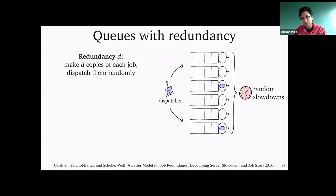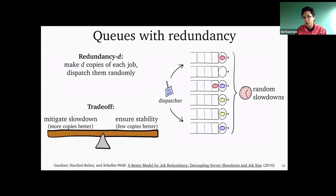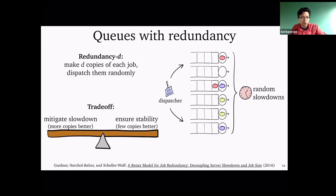In network systems there's an additional wrinkle: servers can have random slowdowns. Each job has a fixed size, but servers may slow down due to some other reason. What you want to understand is: as you keep doing this redundant queuing — taking the same job, creating D copies, sending them to D random servers — how does the system behave? By creating redundant copies, you're removing the slowdown: even if one server slows down, since you're being served elsewhere, overall you may get processed faster. But by creating multiple copies, you may actually make the system unstable because multiple servers are working on the same job, duplicating work.